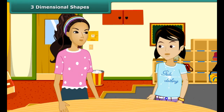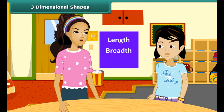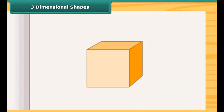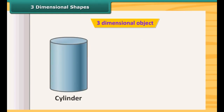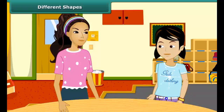What are three-dimensional shapes? A solid object having three measurements — like length, breadth, and height — are called three-dimensional objects. Look at this cuboid. It has length, breadth, and height, so this is a three-dimensional object. The cylinder, cone, etc. are the three-dimensional figures.